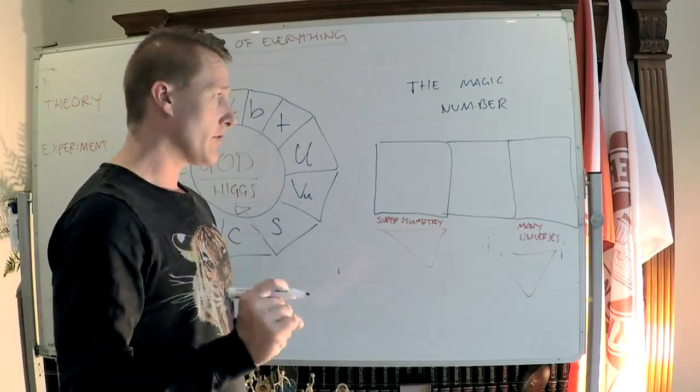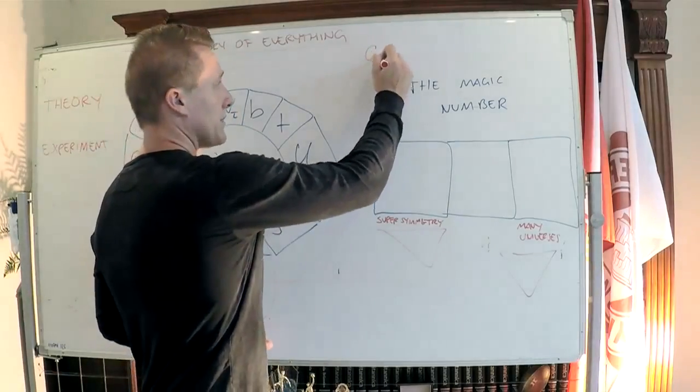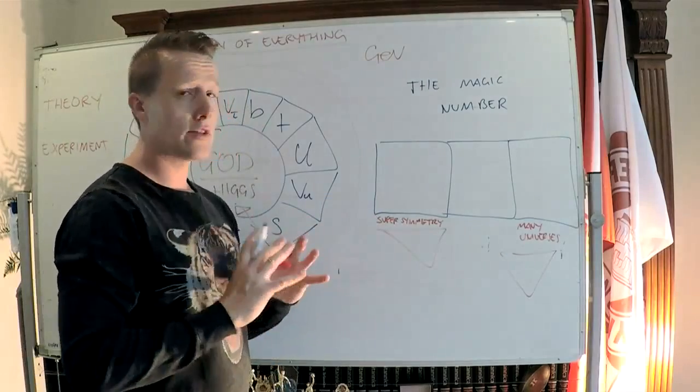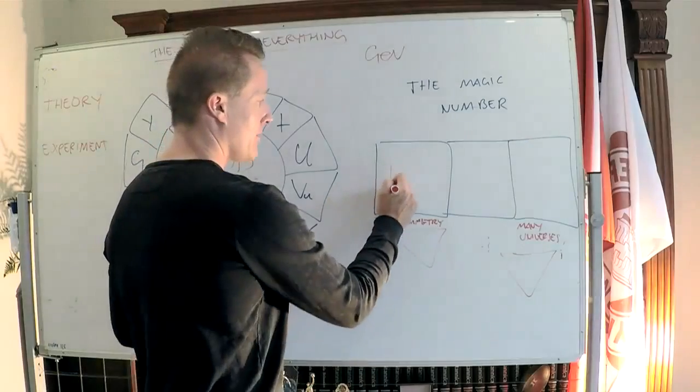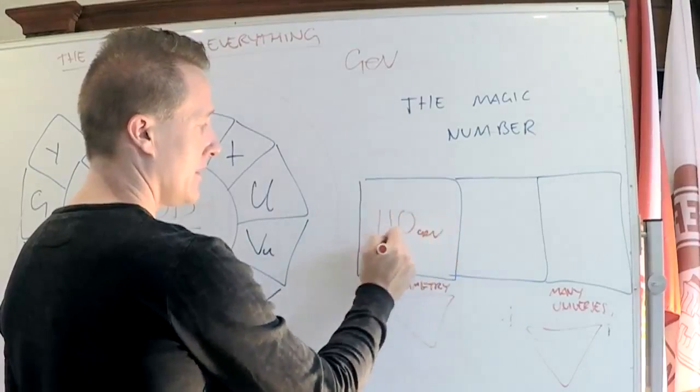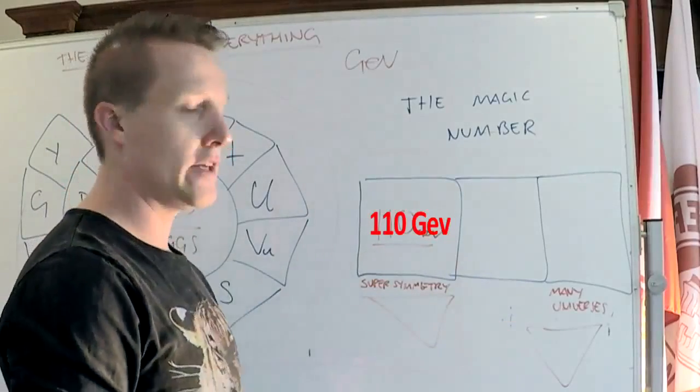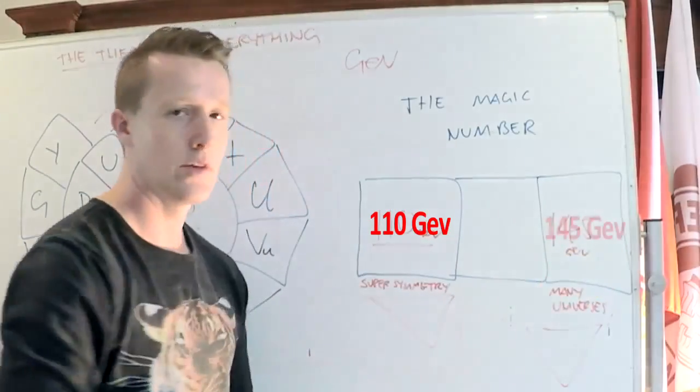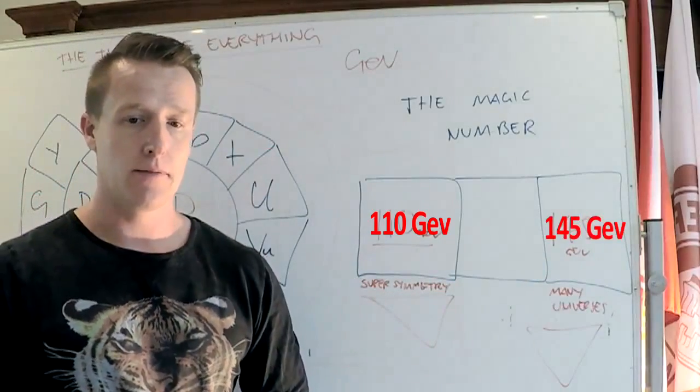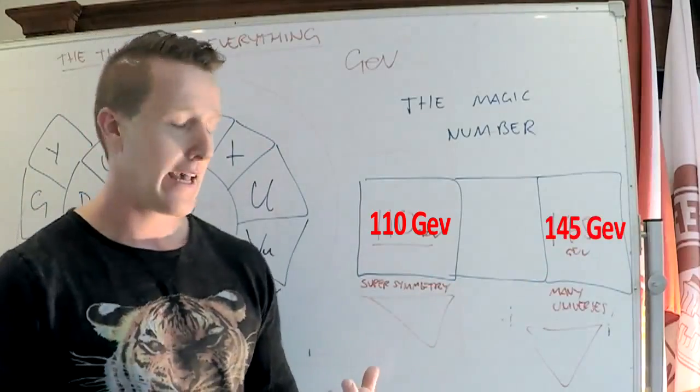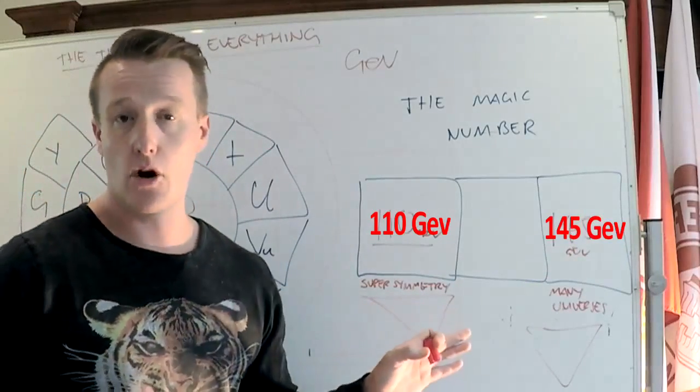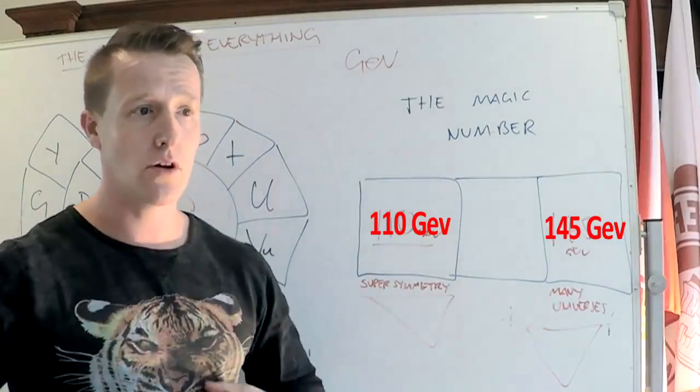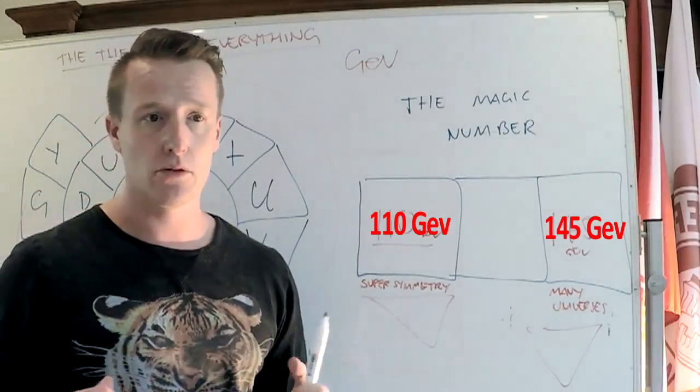Now what's really important about the God particle though is its weight. Weight is measured as GeV and these two theories rely on the weight. For supersymmetry to be right, 110 GeV needs to be the weight of the God particle. For the many universes theory to be right, theorists say that 145 GeV should be the weight of the God particle. Now, it's very scary because the data is in. If supersymmetry is right, we'll weigh the God particle and we'll get 110. If the many universes theory is right, we'll get 145. So a lot of scientists waited with bated breath to get this information and it's fundamental to our entire existence.